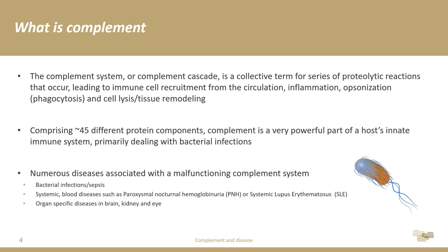The complement system — often referred to as the complement cascade — is a collective term for a series of enzymatic reactions leading to immune cell recruitment from the circulation, inflammation, opsonization (the labeling of surfaces for destruction by phagocytosis), cell lysis, and tissue remodeling. A complement response usually involves about 40–45 different proteins and is a very powerful part of the host's innate immune system, primarily responsible for protecting against bacterial infections. There are numerous diseases associated with a malfunctioning complement system — bacterial infections, sepsis, systemic blood diseases, and diseases targeting specific organs such as the brain, kidney, and eye.